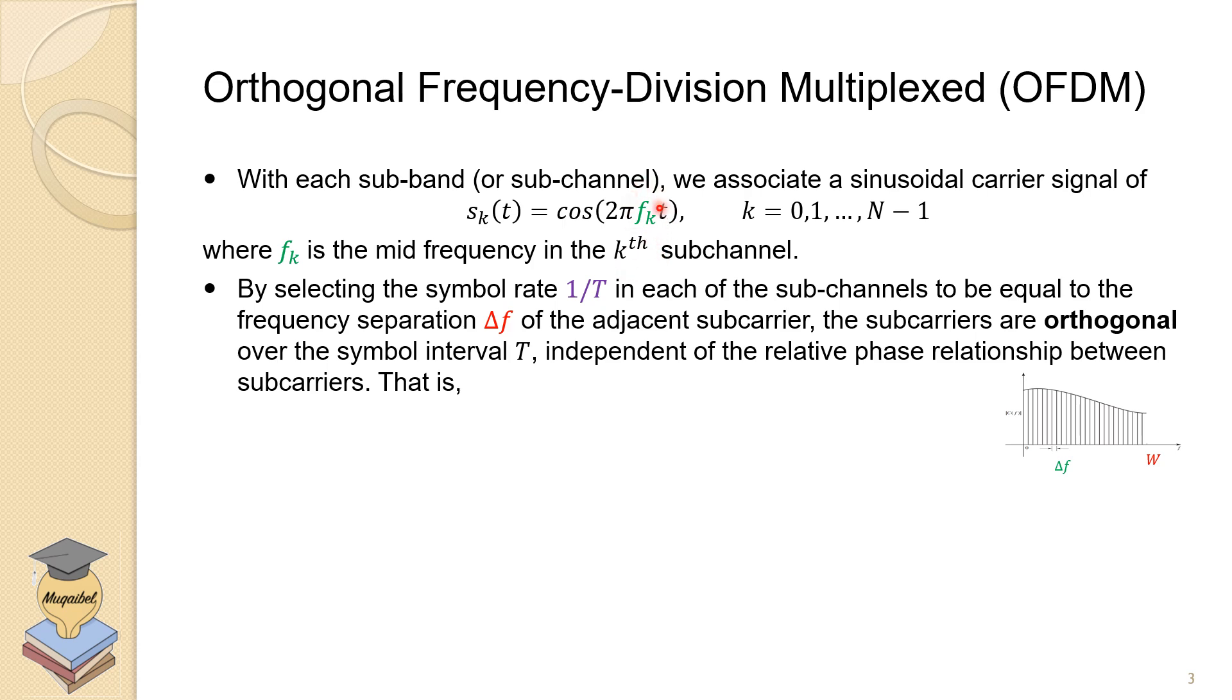Now we can select this f_k in a way to make sure that the carriers are orthogonal. So for example, if the symbol duration is T, then 1 over T would be the symbol rate. Assuming that we are transmitting the same rate over all the subchannels, 1 over T would be the subchannel symbol rate. And we can relate that to Δf, the separation in the frequency, so that we make sure that the carriers are orthogonal. So to make sure that this is valid, we can make sure that the difference between the two frequencies is equal to multiples of 1 over T, where T is the symbol duration and n is a multiplier. So if you compare f_2 with f_1, f_3 with f_1, and so on, you make sure that always the difference in frequencies has to be multiples of the symbol rate.